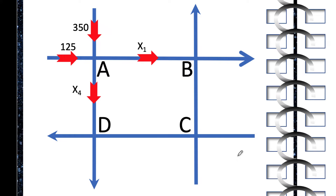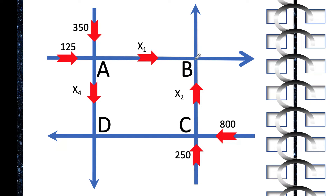Now coming from the east going to intersection C, the flow of traffic is 800 cars per hour. And coming from the south going to intersection C, the flow of traffic is 250 cars per hour. Those cars can either go to intersection B or intersection D. The flow of traffic to intersection B from intersection C is x2 cars per hour. And those cars coming from intersections A and C can flow to two opposite directions, one going to the east at 400 cars per hour and the others going north at 255 cars per hour. Then finally, part of those cars that entered intersection C will flow to intersection D at the rate of x3 cars per hour.